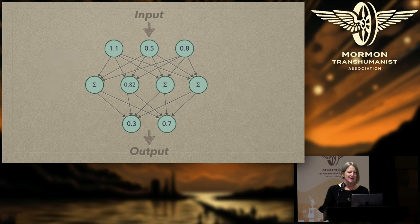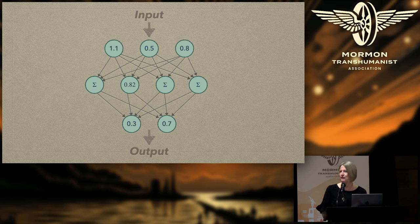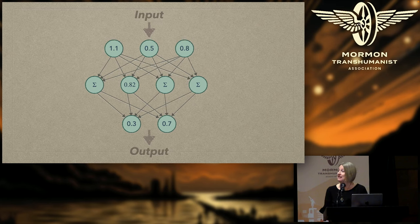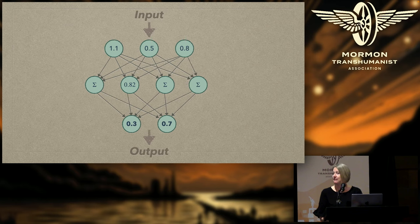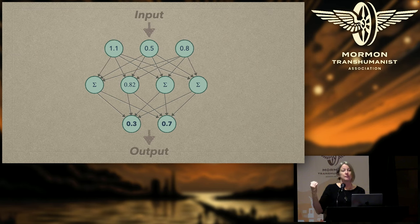You start by randomly initializing all the weights—total random values somewhere between zero and one. You run your data through, and guess what? It does a really terrible job at whatever you want your AI system to learn. It outputs garbage. That's okay, because garbage is the first step to awesomeness. We then look at those output weights and we say, okay, sure, it gave us maybe a 0.3 and 0.7. We wanted those to be something different. And that is why you'll hear things about training data and training examples when we talk about neural networks, because we have to tell the neural network what it was supposed to do in order for it to be able to get better. It needs feedback.